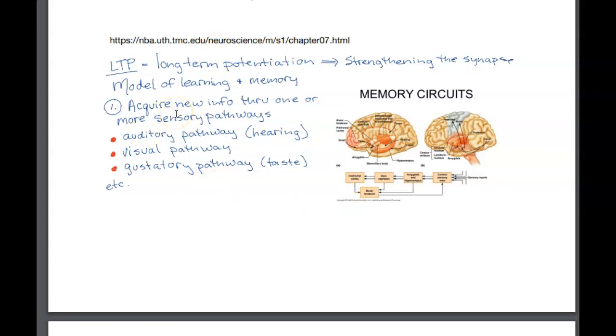We acquire information through a bunch of sensory modalities. In other words, we hear something through our auditory pathway, we might see something through our visual pathway. We have taste, so that would be gustatory, and others. When we pick up sensory information, that's how we learn about our world.